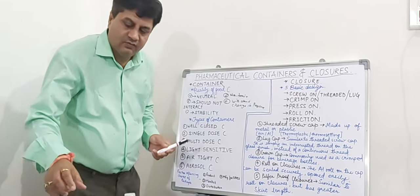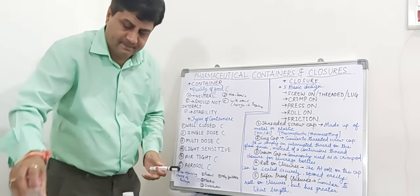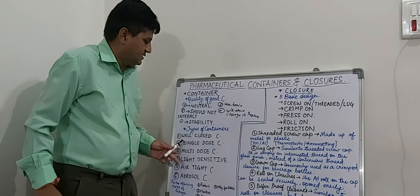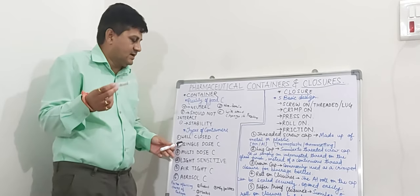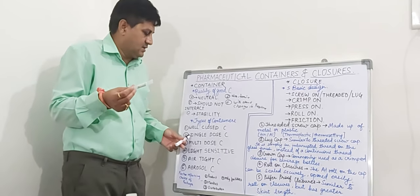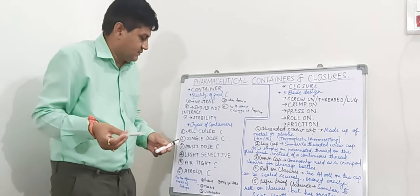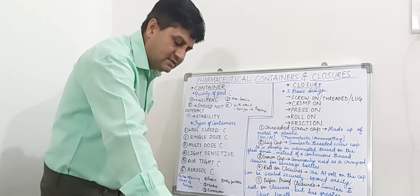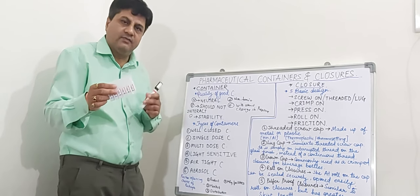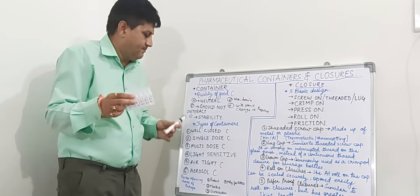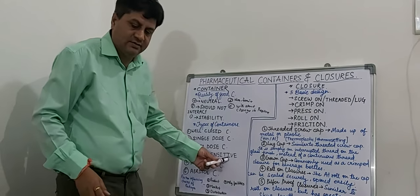The well-closed container is totally closed. The single-dose container contains a single dose and is available in vial or ampoule form — it falls under the parenteral dosage form. The multi-dose container contains multiple doses and is also available in vial or ampoule form, and it also falls under the parenteral category.